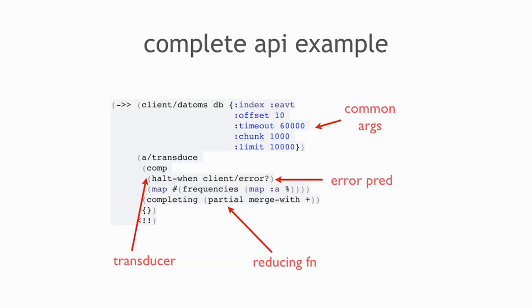Here is a more complete example. Here I'm calling the raw index — client slash datums — which says go and give me the raw index. I want to walk the index in EAVT order, skip the first 10 items, wait up to 60 seconds, get them back 1,000 at a time, and limit to 10,000. Then I'm going to async transduce the results.